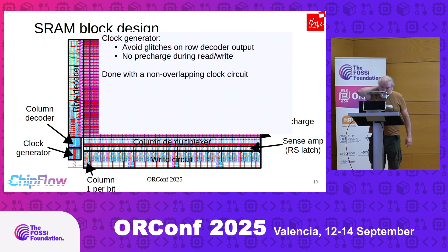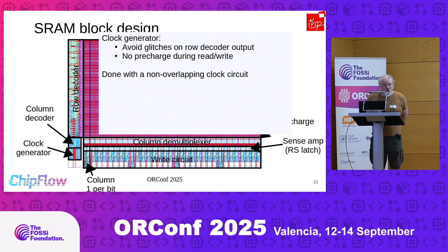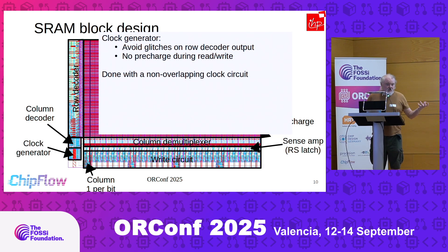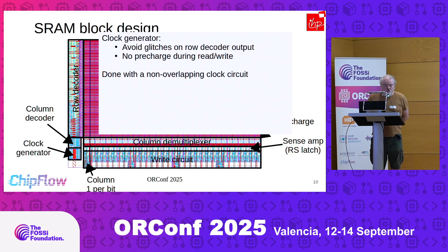Then you have the clock generator. What it has to do is avoid glitches on the output — you only want to activate your row decoder after the decoder has settled, because otherwise you get glitches on the word line and you don't want that. You also want to be sure you don't have pre-charge active during your read or write cycle, so you do that with a non-overlapping clock circuit.